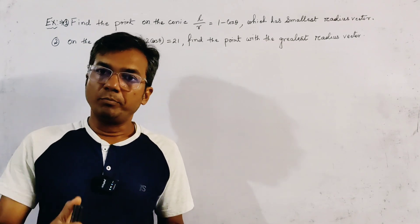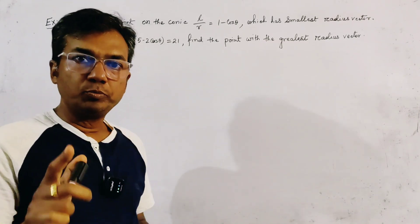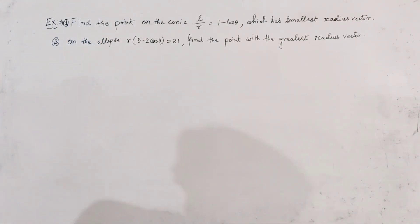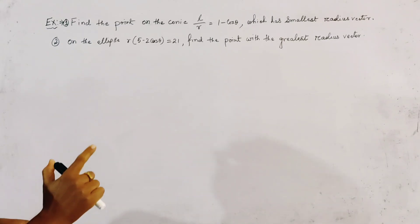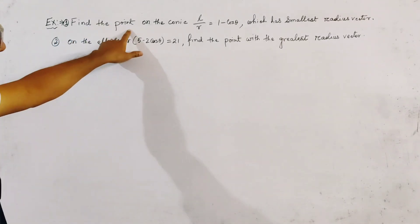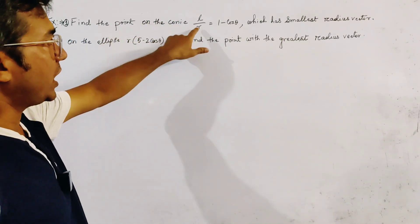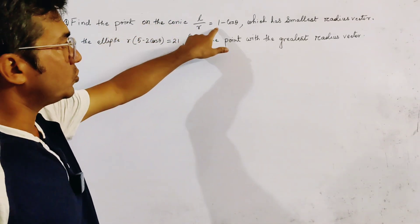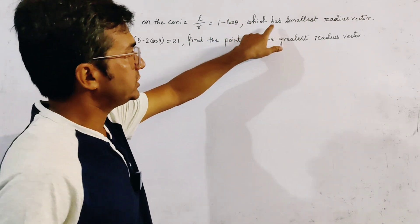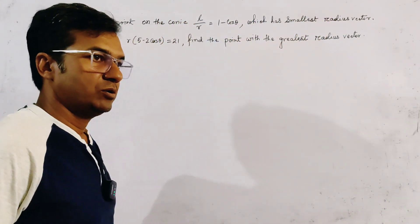Two problems from polar equations, and the two problems are of the same type. The first one is: find the point on the conic L/R = 1 - cosθ which has the smallest radius vector.